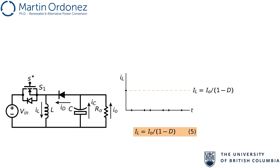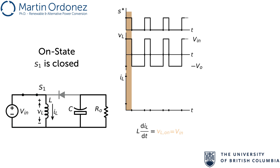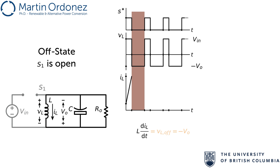The variation in the inductor current around the average value is controlled by the inductor voltage waveform and the inductor differential equation, which relates the derivative of IL with the voltage applied to the inductor. During the on time, the input voltage is applied to the inductor. Since this is a positive constant value, the current increases linearly during the on time. When the switch is turned off, the output voltage, which has a reverse polarity, is applied to the inductor. Since this is a constant negative voltage, the inductor current will decrease linearly to the same starting point, to start the sequence again.